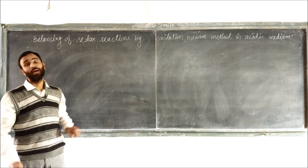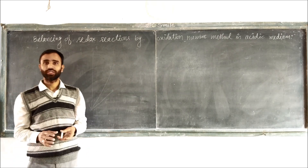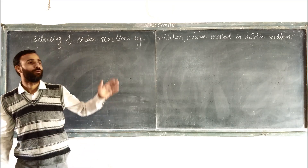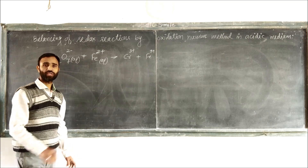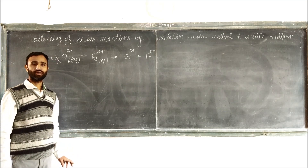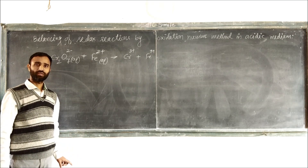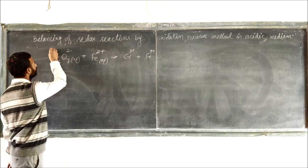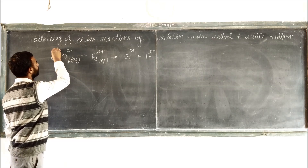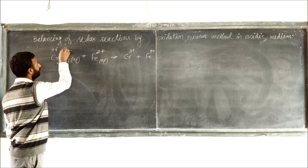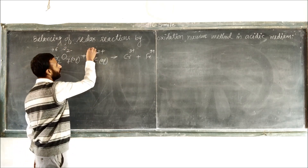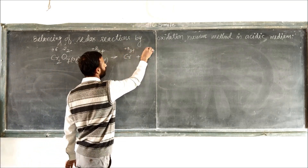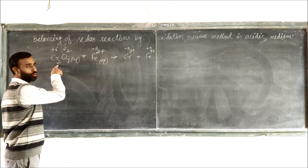Today's topic is Balancing of Oxidation-Reduction Equations by the Oxidation Number Method in Acidic Medium. The first step is to write the oxidation number of each atom. The oxidation number of Chromium is +6, Oxygen is -2, Iron changes from +2 to +3, and Chromium changes as well.